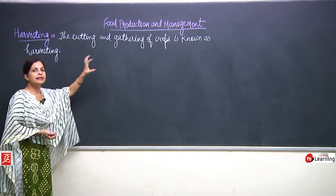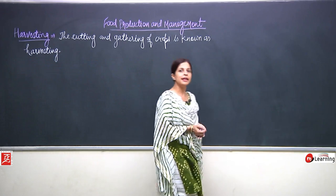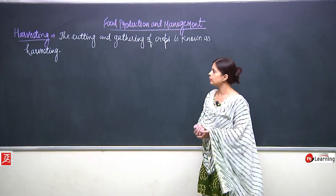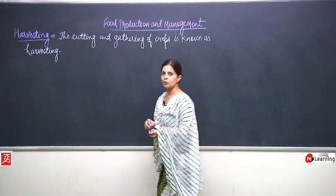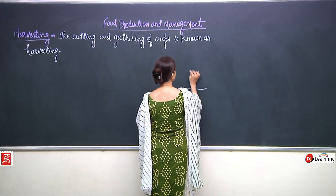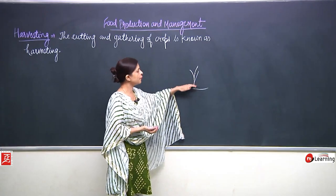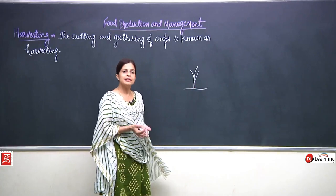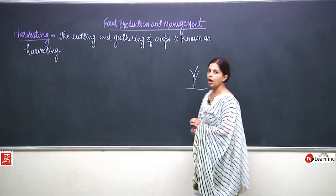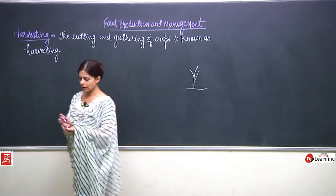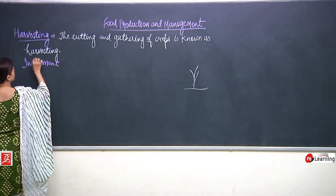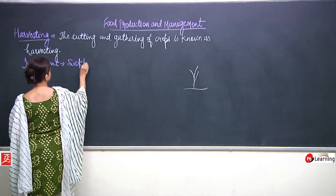Now what is the exact meaning of this definition? There are many crops which just need to be cut — the farmers cut them from here — and some crops they uproot. We have discussed how they cut it and how they uproot it. They cut it with the help of a sickle. The instrument used here is the sickle.